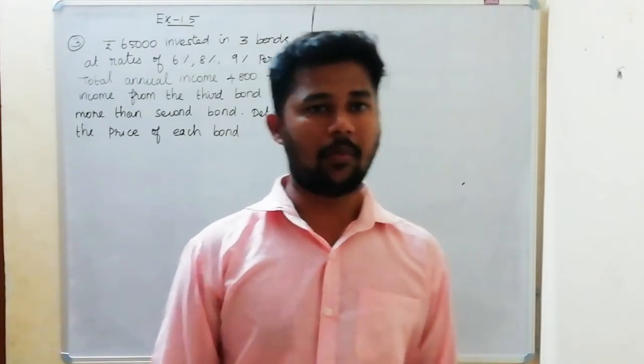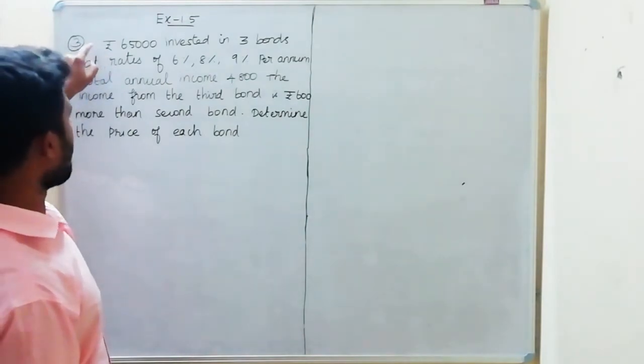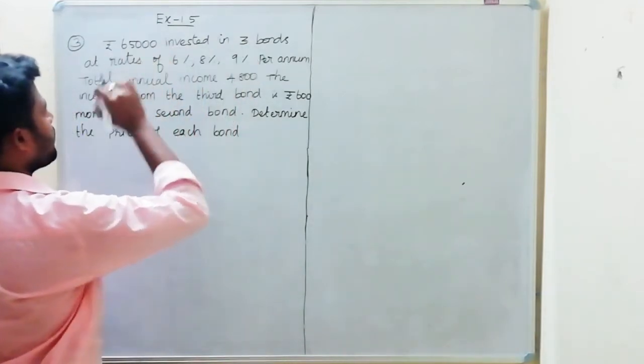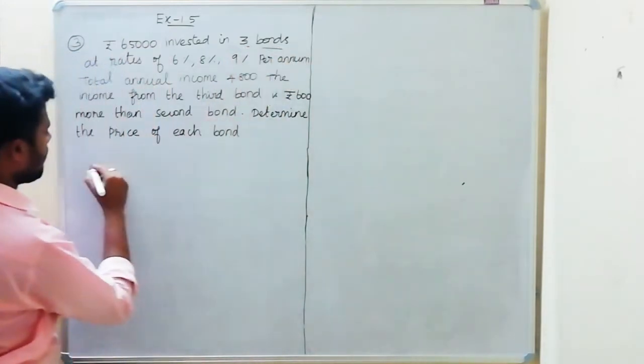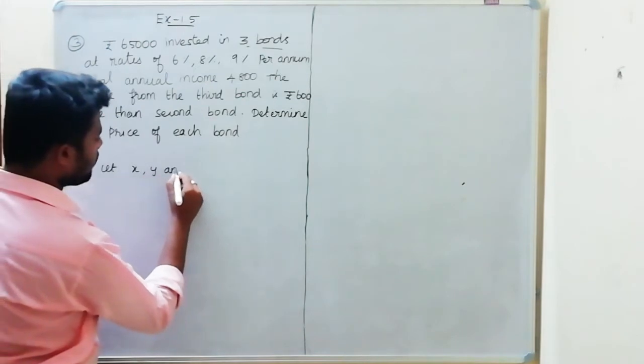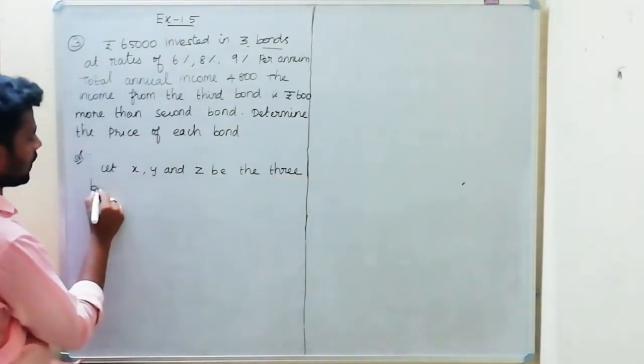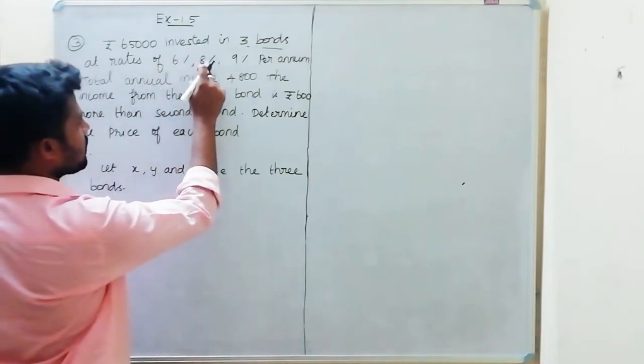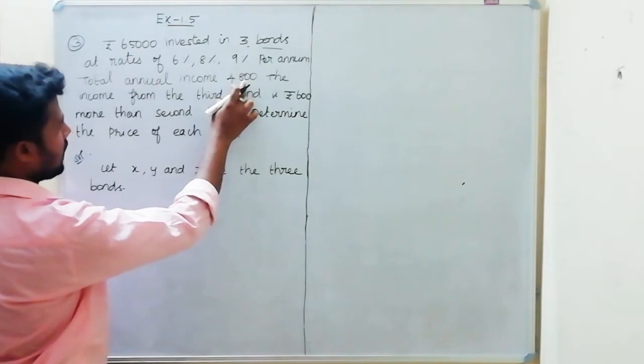Welcome back. We're solving exercise 1.5, third question. Rupees 65,000 is invested in 3 bonds at rates of 6%, 8%, and 9% per annum. Total annual income is 4,800. Let x, y, and z be the 3 bonds.